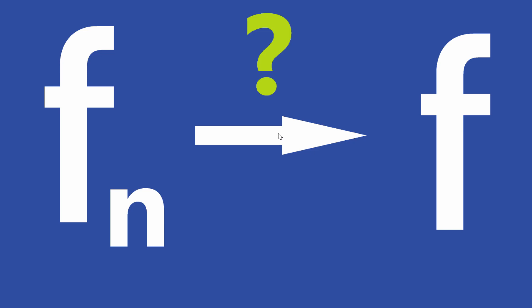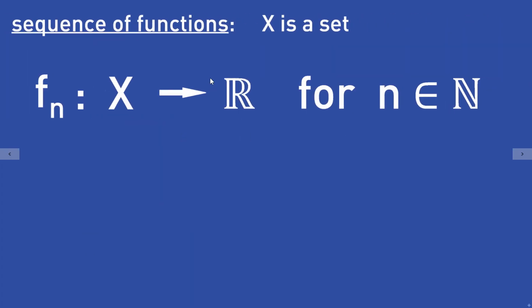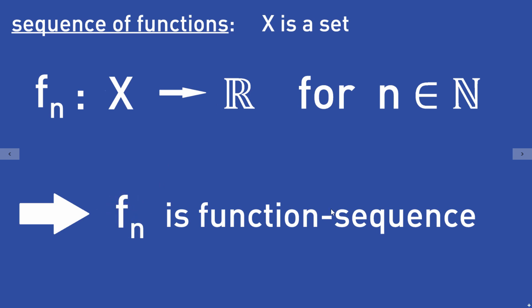I will also tell you why the concept of uniform convergence is needed and helpful in mathematics. First of all, pointwise and uniform convergence are convergence concepts for sequences of functions, so we need a sequence of functions. Let X be some set, and for each natural number n, let fn be a function from X to the real numbers ℝ. You can also replace ℝ with the complex numbers ℂ if you want.